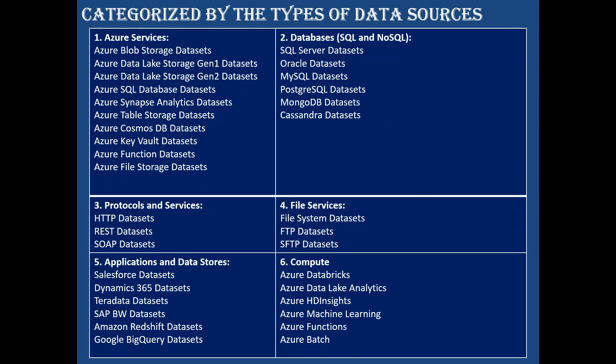Looking at dataset categories by type of data source: for Azure services we can create blob storage datasets, Data Lake Storage Gen1 and Gen2 datasets. For databases: SQL Server, Oracle, MySQL datasets. For protocols: HTTP and REST datasets. For file services: file system and FTP datasets. For applications and data stores: Salesforce, Dynamics 365, Teradata, and Databricks datasets — all these we can create.